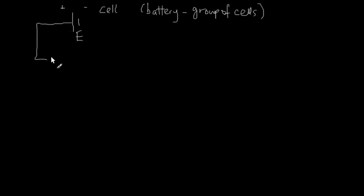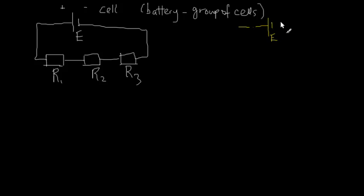So I have this cell and let's say it has an EMF of E and I want to connect this to let's say three resistors one, two, and three. I'll call this R1, R2, and R3. And the problem now is to find a combined resistance, a single resistor that would give the same current as the separate resistances together.